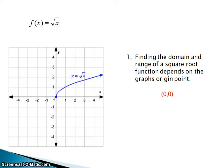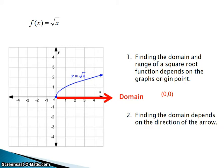Once you find where it starts, I really recommend for a good visual that you draw a line like this thick red line. It doesn't have to be thick, but you're going to draw a line where it starts and direct it in the direction that your square root function is going. We can see that this one is going to the right. Now we know the direction of the arrow — the arrow is going to the right — which also indicates the direction of domain.